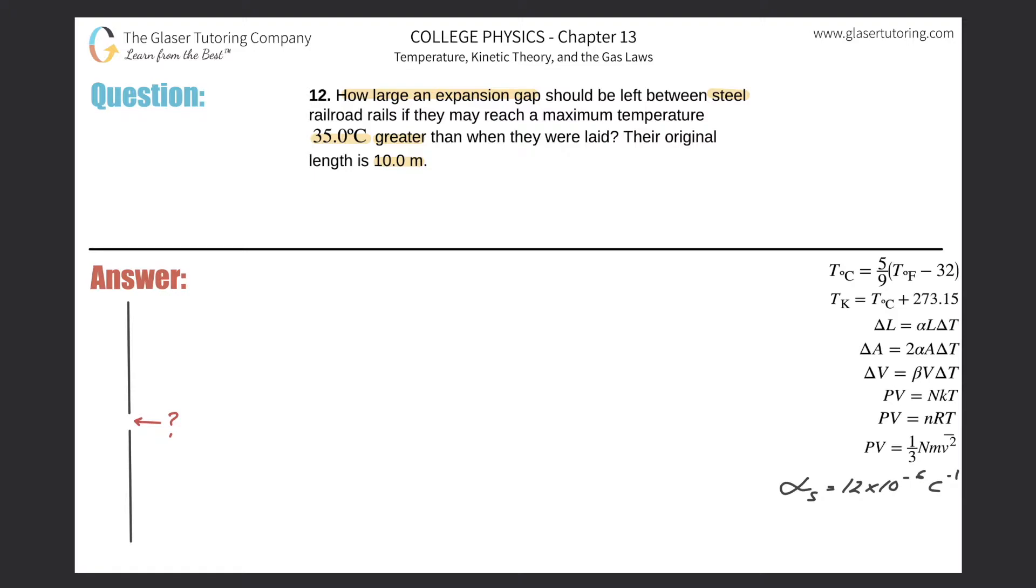However, we can manipulate these alpha values. The alpha here, this is two alpha, and then beta is essentially three alpha. So we can manipulate the linear coefficient of thermal expansion so that we can find length, area, and volume changes.